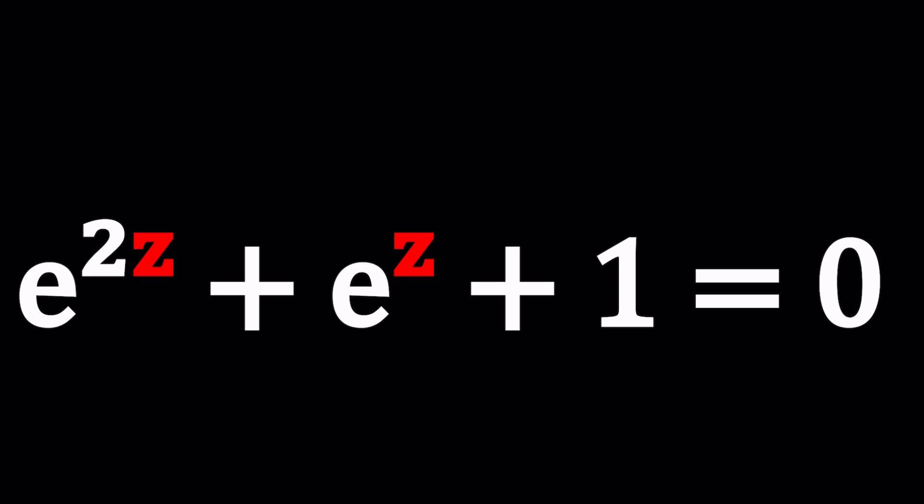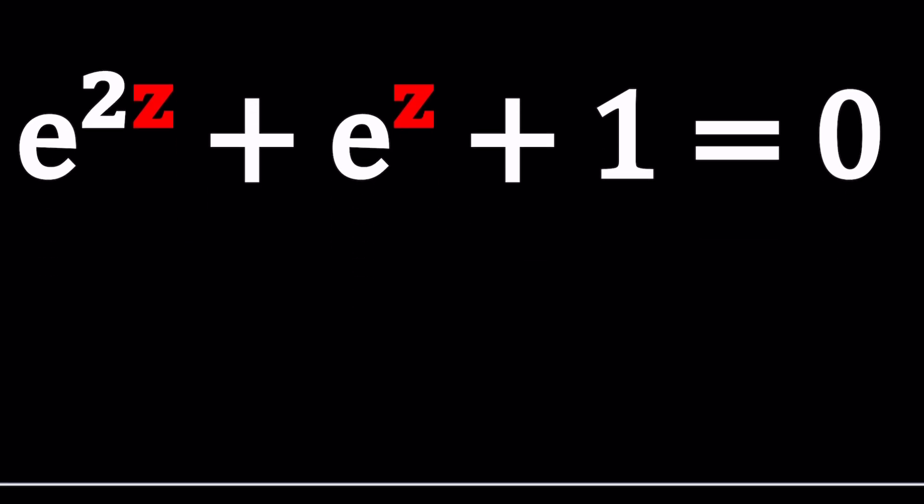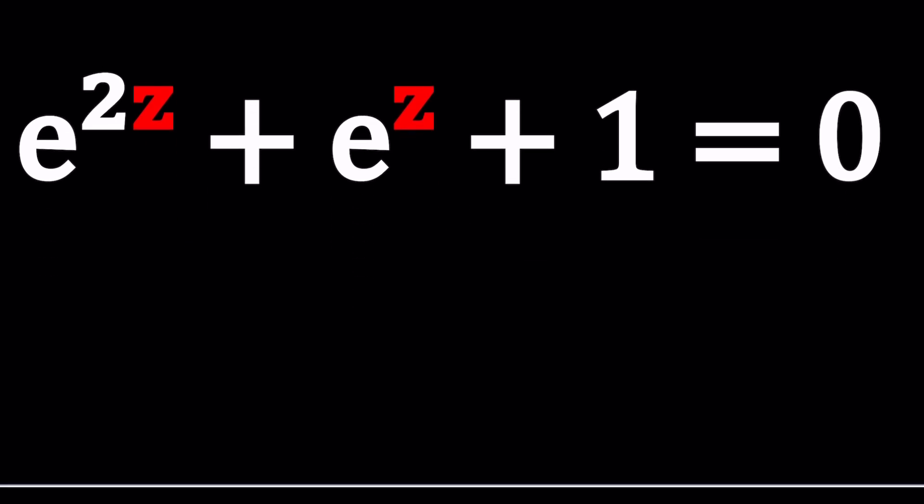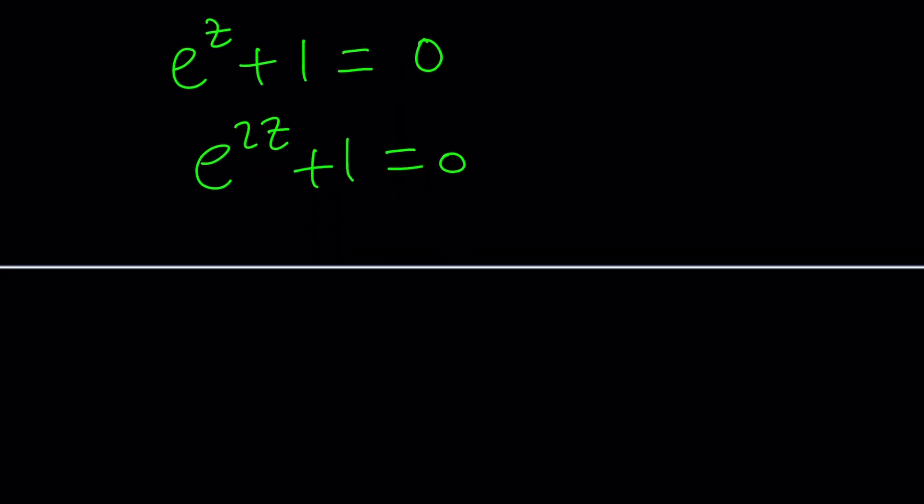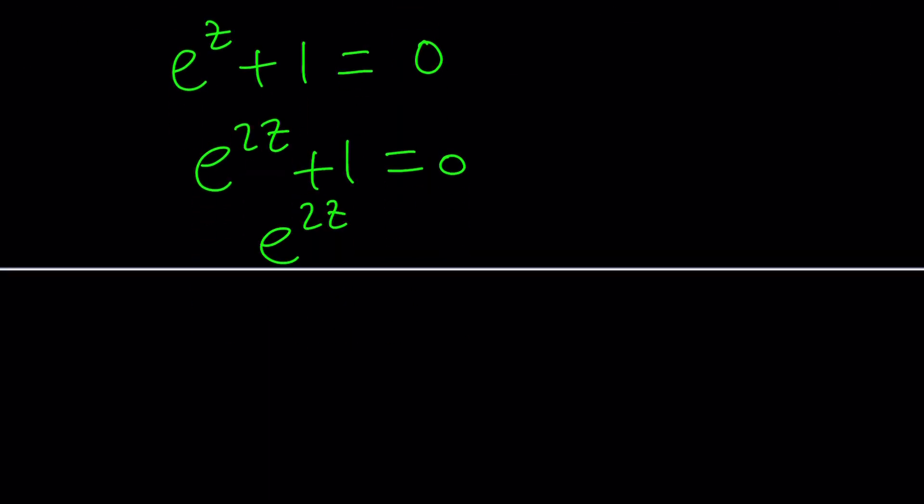We have an exponential equation that kind of looks non-standard because if we had a single e to the power something like this, we could probably just set it equal to negative 1. Or if we had this instead, we could just isolate e to the power 2z and then write this as an exponential. In other words, we need to complexify negative 1 and that can be done using Euler's formula.